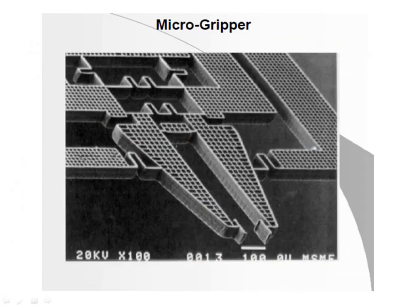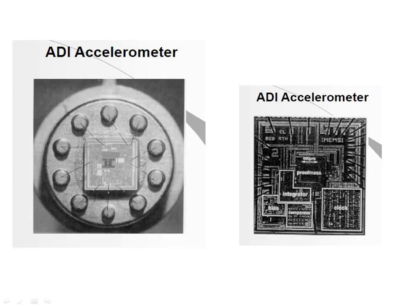A microfabricated microgripper is a microscopic device used to grasp and manipulate microscale objects safely. Precise handling of components, parts, and tools at automated assembly lines, as well as sample handling in life science, are crucial positioning tasks. MEMS accelerometers by Analog Devices Incorporated offer highly accurate motion detection when measuring acceleration, tilt, shock, and vibration in performance-driven applications.